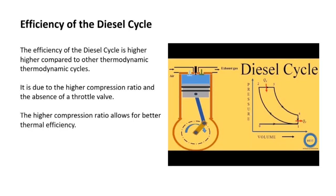The efficiency of the diesel cycle is higher compared to other thermodynamic cycles. This is due to the higher compression ratio and the absence of a throttle valve. The higher compression ratio allows for better thermal efficiency.